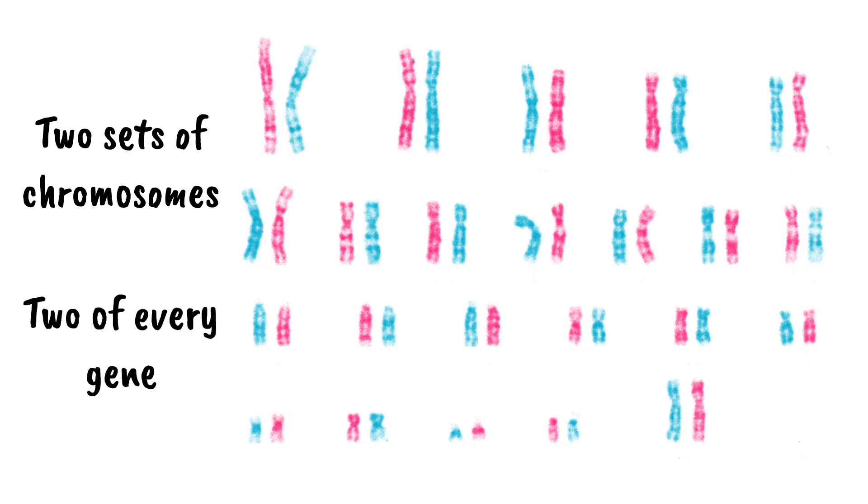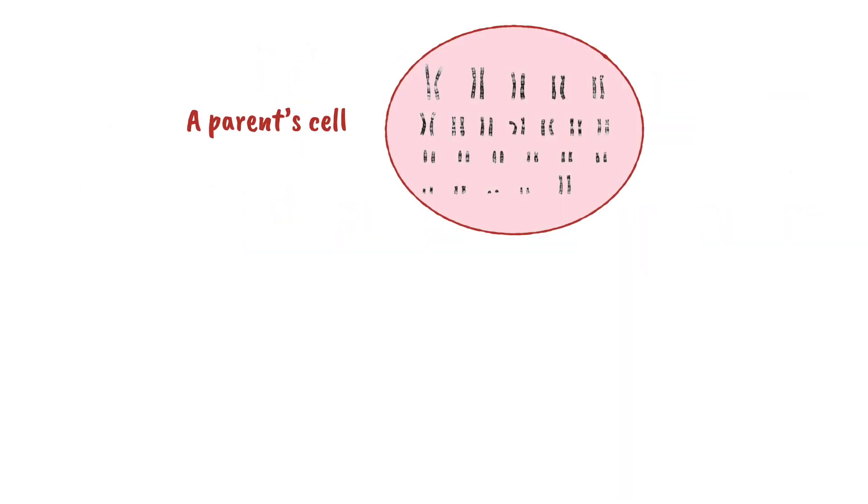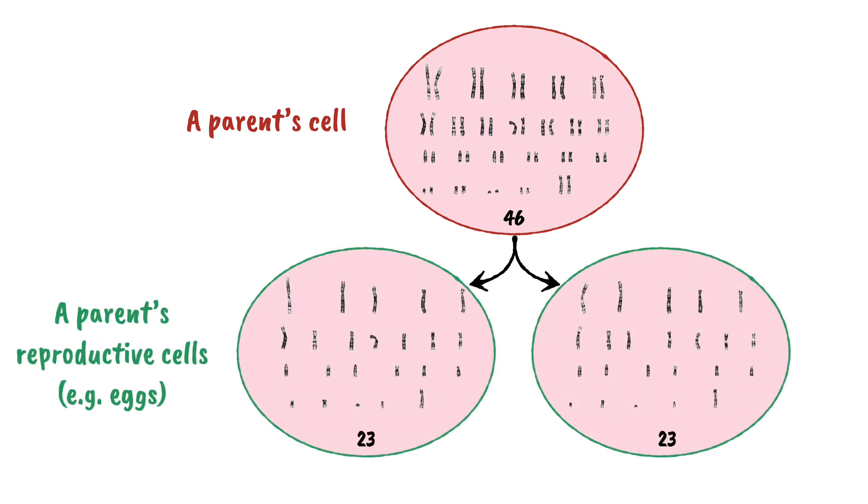When reproductive cells are formed, for example egg cells, some of the parent cells with 46 chromosomes divide in a way to provide reproductive cells, each with 23 chromosomes in them.